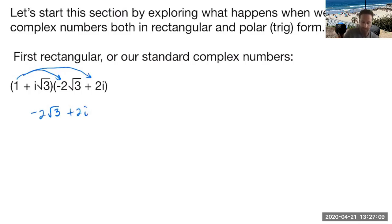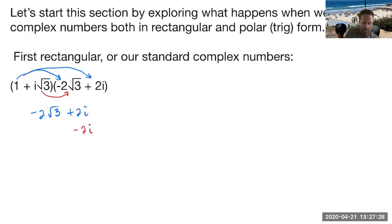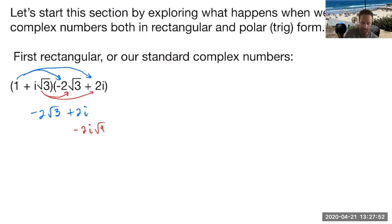When I multiply by i root three it gets a little more tricky. Remember we can multiply the outsides and insides of radicals. So i times negative two gives me negative two i, and root three times root three gives me the square root of nine, which is three. Then distributing i root three to the two i gives me positive two i squared times the square root of three.